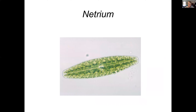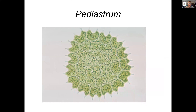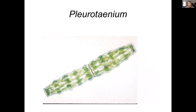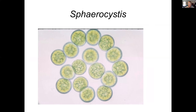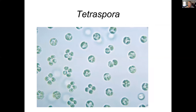Netrium is simple, like Closterium. Pediastrum is one of my favorites along with Micrasterias — very pretty. Spirogyra or Zygnema, or something related, gives us a filamentous form. Sphaerocystis has very simple cells. And Tetraspora rounds out the diversity shown here.